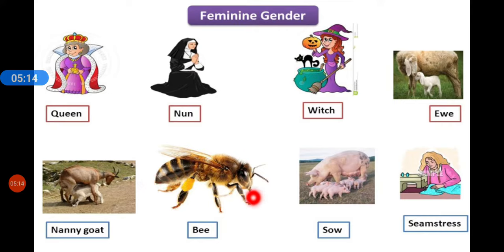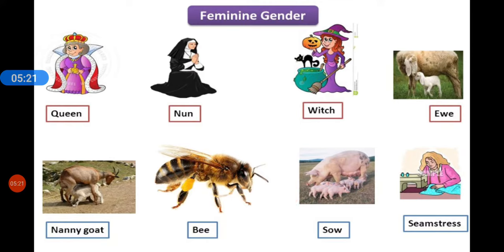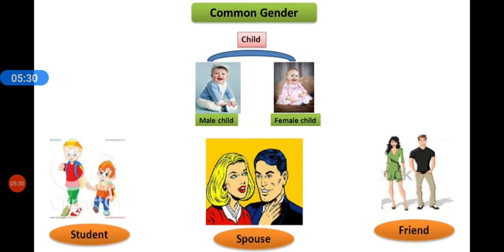Also, bee and the feminine of pig are feminine gender nouns. Hope you remember all this — we have done all of it earlier. Let's move on further.